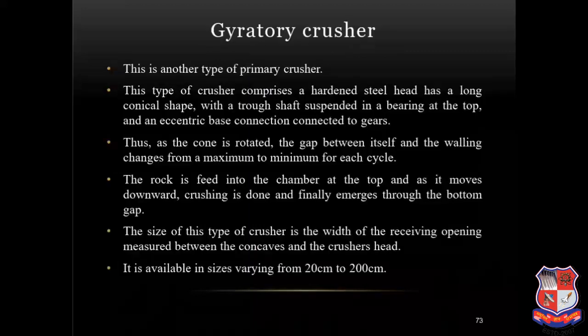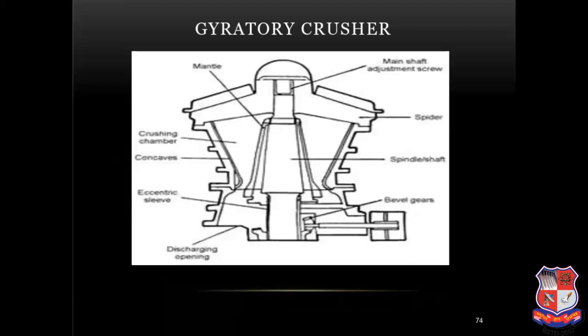Gyratory crushers are another type of primary crusher. They comprise a hardened steel head with a long conical shape, with a throw shaft suspended in a bearing at the top and an eccentric base connected to gears. As the cone is rotated, the gap between itself and the wall changes from maximum to minimum for each cycle. The rock is fed into the chamber at the top and as it moves downwards, crushing is done and it finally emerges through the bottom gap. The size of this type of crusher is the width of the receiving opening measured between the concaves and the crusher head. It is available in sizes varying from 20 cm to 200 cm.